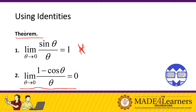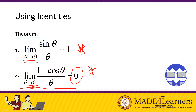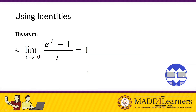Theorem number two: we have one minus cosine theta over theta as theta approaches zero. Substituting zero gives zero over zero, which is zero. We will prove this one later as well.